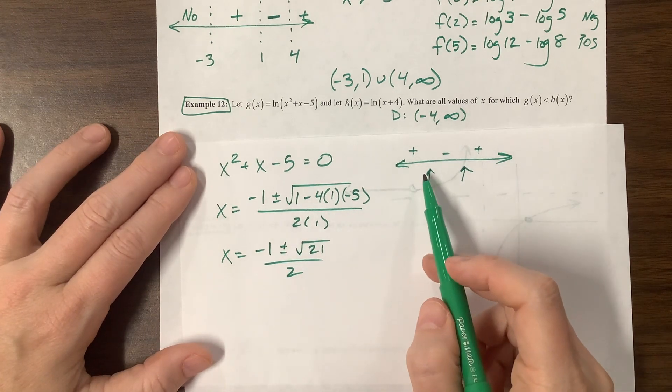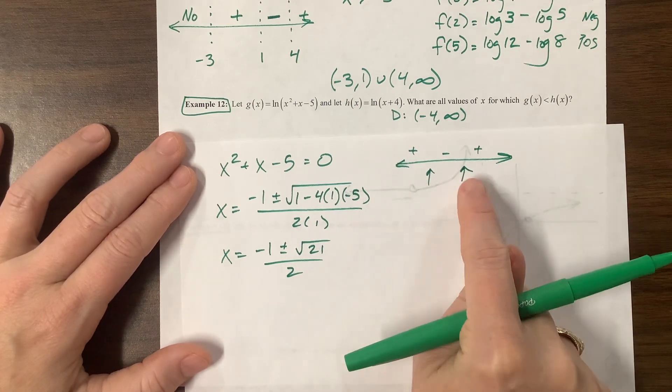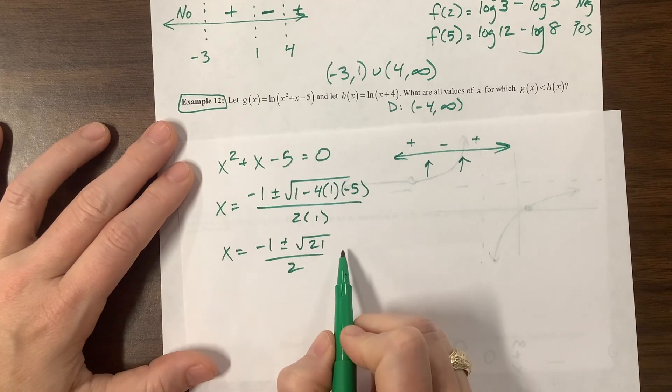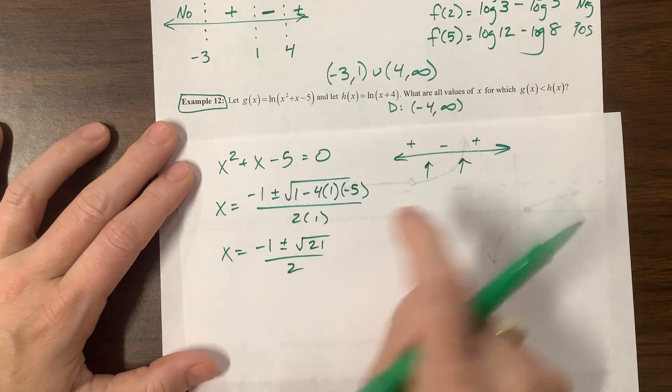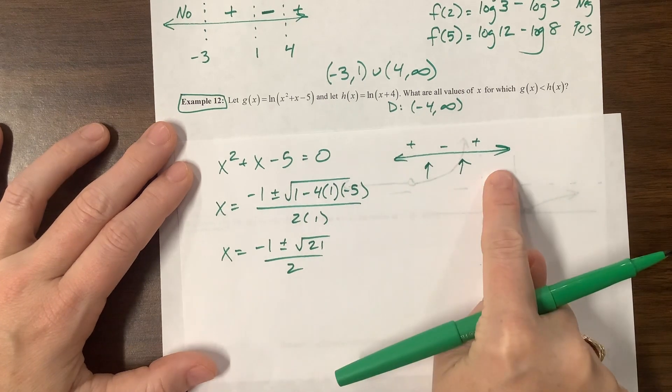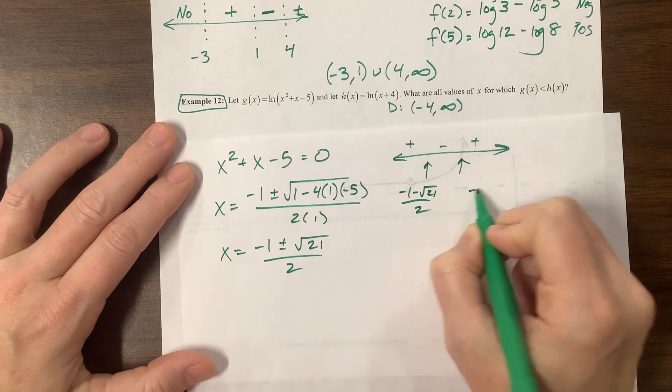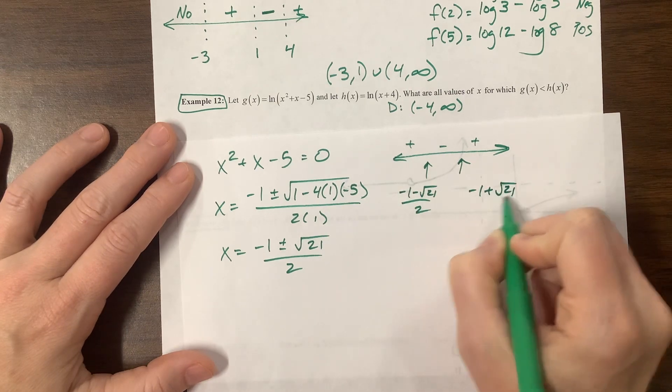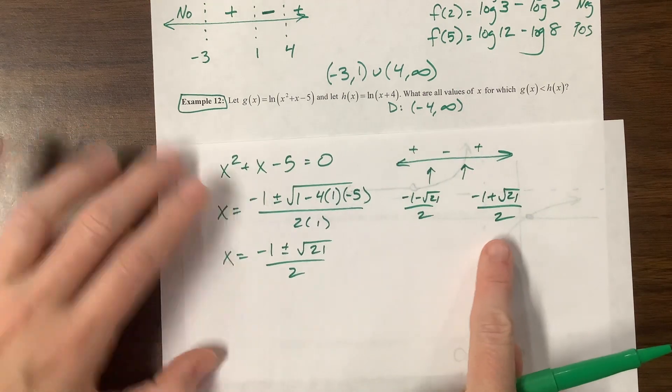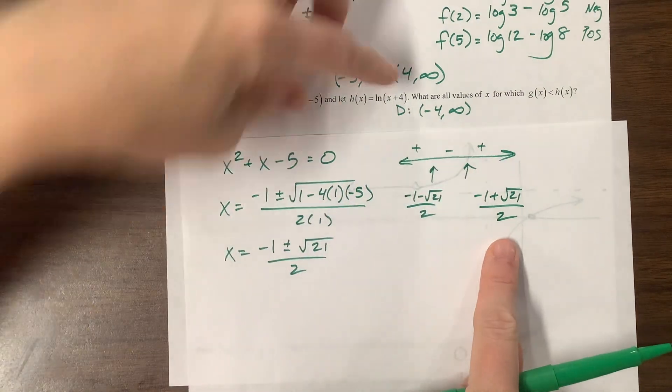One of those is going to be negative, one of them is going to be positive. We can't equal either one of them here. We need things that are smaller than the negative and larger than the positive one. This one right here was negative 1 minus root 21 over 2, and this one right here was negative 1 plus root 21 over 2, and we want things in this interval and that interval. We'll compare those to negative 4, and then we also need to compare it to where these things intersect.